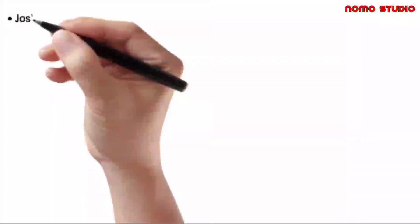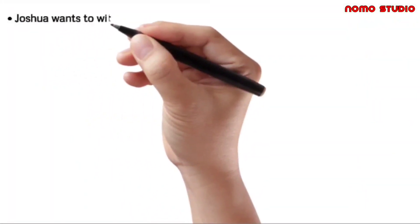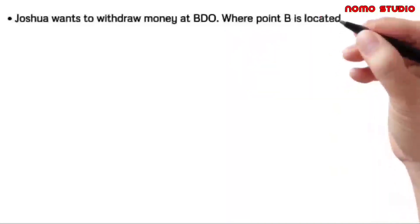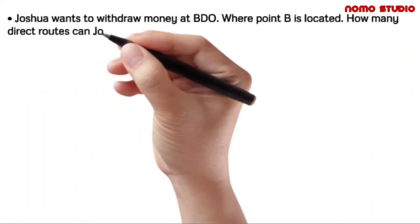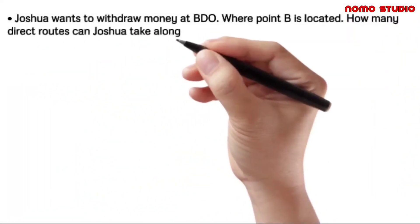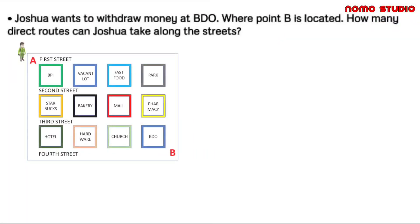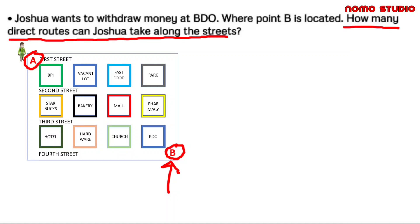Let's try to solve this one. Joshua wants to withdraw money at BDO, where point B is located. How many direct routes can Joshua take along the streets? Looking at the figure, Joshua wants to travel from point A to point B, and the question is how many direct routes can he take along the streets?